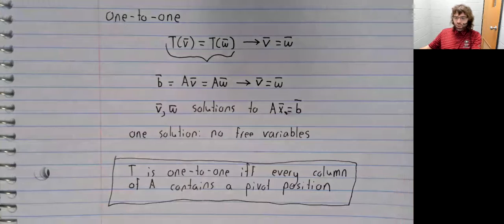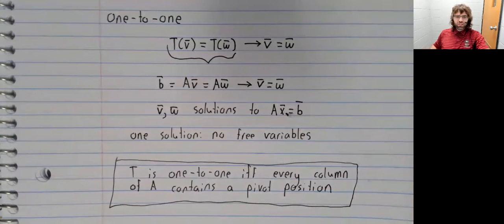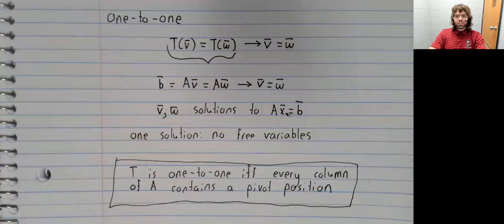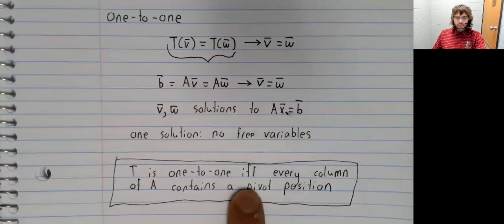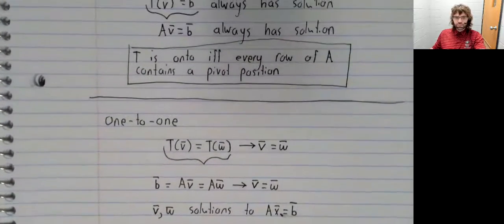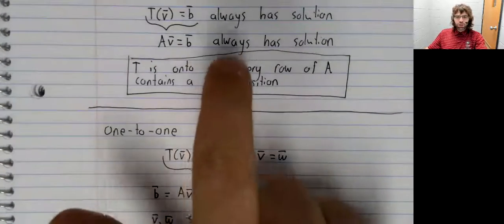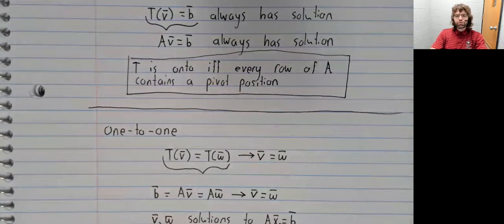So in both these cases, one to one and onto, we're looking at the pivot positions of A. To be one to one every column needs a pivot position. To be onto, every row needs a pivot position.